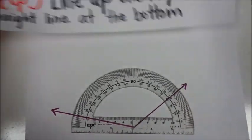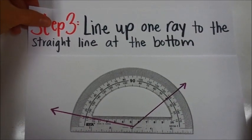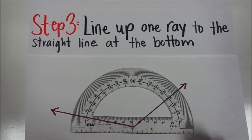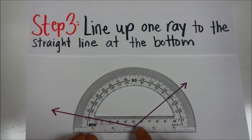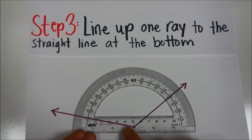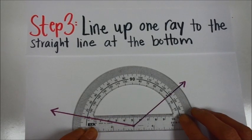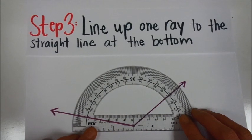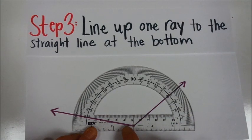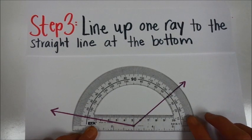Step 3 is to line up one ray of the angle to the straight line at the bottom. There are two straight lines here right on either side of the hole, and you need to get those lines lined up with one of the rays. So I'm going to rotate my protractor until this black line matches up with the purple line.